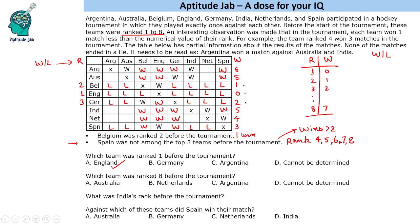One team has to win 4 matches. Looking at the table, Netherlands is the only team that fits — Netherlands is rank 5 with 4 wins. The rest of Netherlands' matches are losses, so the remaining teams win against Netherlands. The win totals become 7 and 6. 7 wins means rank 8, 6 wins means rank 7, and 5 wins means rank 6. Argentina won all its matches — all teams lost against Argentina, making Argentina rank 8. This gives us the complete ranking of all teams.